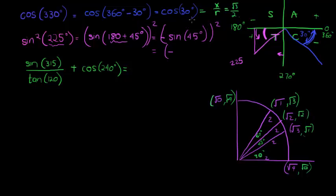Sine of 45, sine is y over r, so sine of 45 is square root 2 over 2. And this thing is being squared, and what do we get? Square root 2 squared will just give me 2, negative squared is positive, over 2 squared is 4, so my answer is a half. Sine squared of 225 gives me a half.